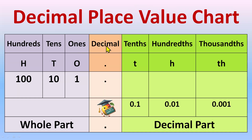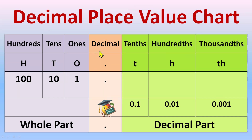Now, after the 1s place, you can see a decimal point, and then directly start tenths — not ones. It's tenths, hundredths, thousandths. In short form, we write capitals for the whole number places, and for the decimal part — tenths, hundredths, thousandths — we use small t, small h, small th. Before the decimal we call it the whole part; after the decimal, we call it the decimal part.